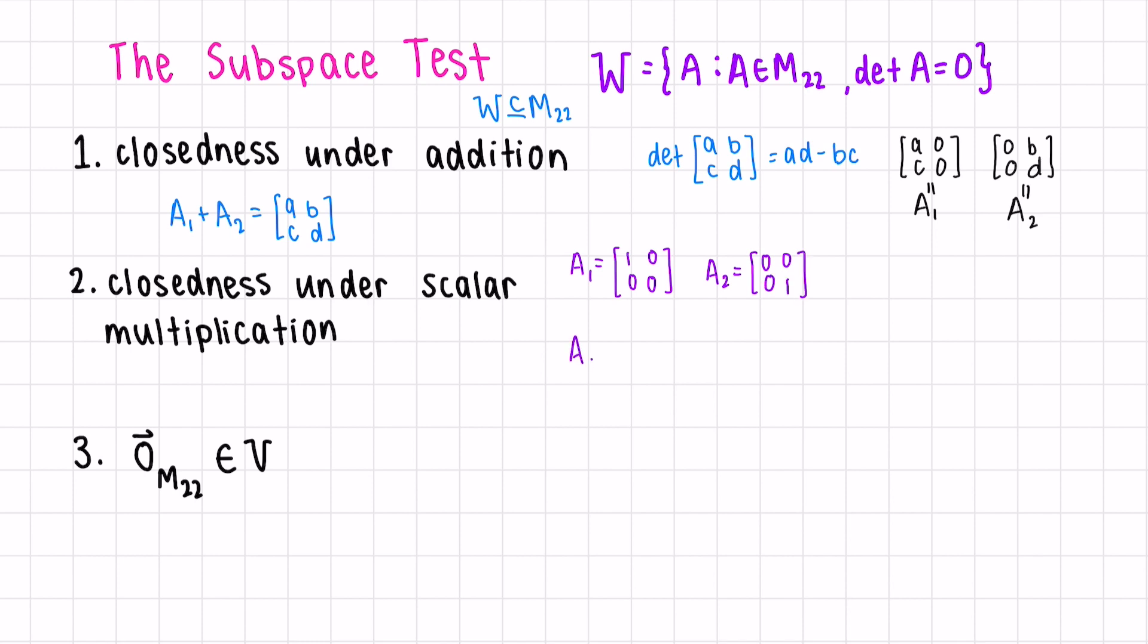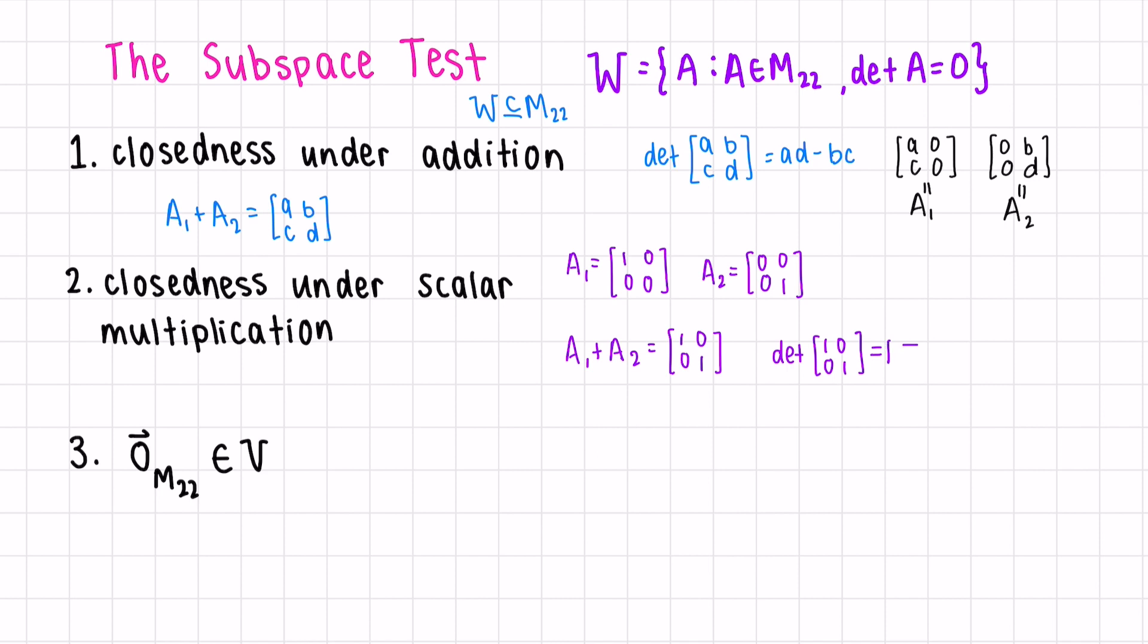Then if we add them together, A1 plus A2, we get 1, 0, 0, 1. What is the determinant of this new matrix? AD minus BC, so 1 times 1 minus 0 times 0, which is 1, which is not 0.